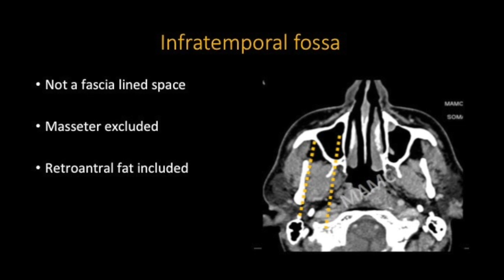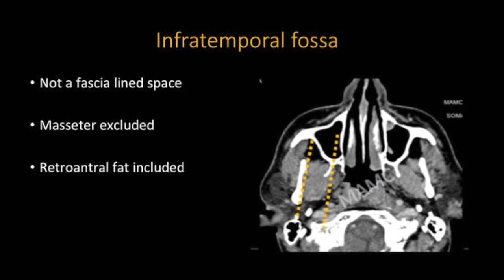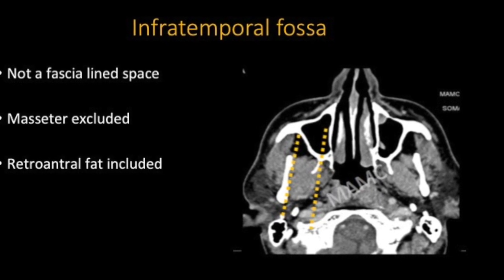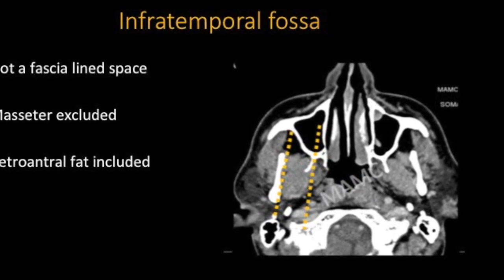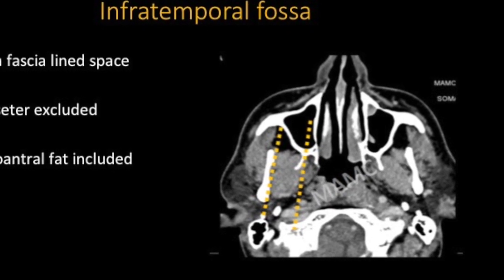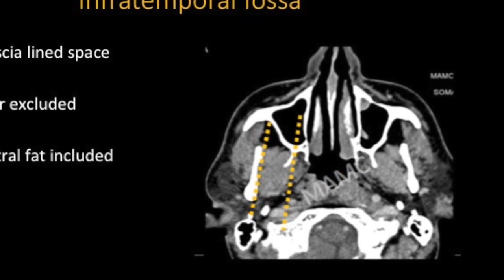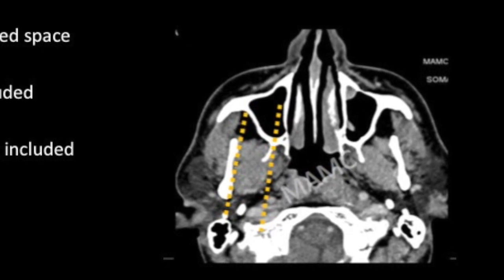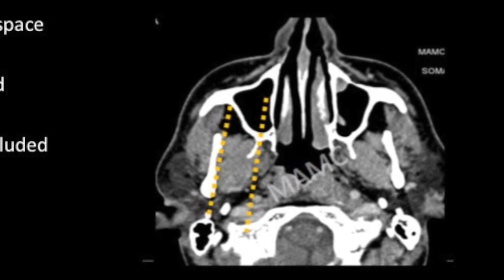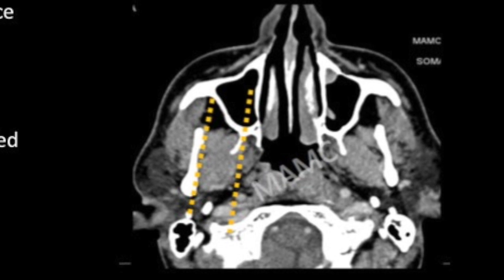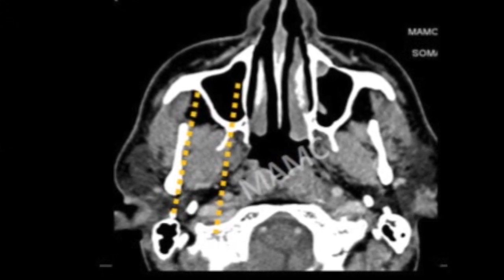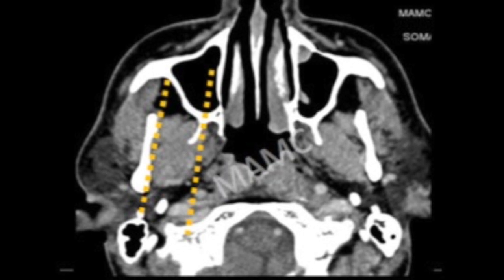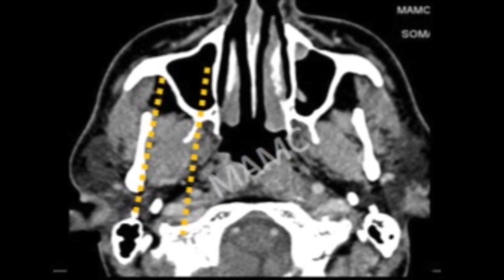A term we may have heard of is infratemporal fossa. This is an area which is not synonymous with masticator space — there are subtle differences between them. The infratemporal fossa is not a fascia-lined space, in contrast to the masticator space. It runs between two lines: the lateral one along the medial margin of the mandible, and the medial one along the pterygomaxillary fissure. In addition to the contents of the masticator space, it also contains retroantral fat and part of the parapharyngeal fat, but notably does not include the masseter muscle. This terminology should be clear when communicating with ENT colleagues.